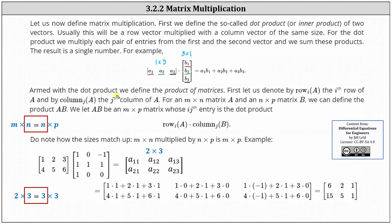Now that we've defined the dot product or inner product, we can define the product of matrices. Let us denote the i-th row of matrix a as row sub i of a, and the j-th column of a as column sub j of a. For an m by n matrix a and an n by p matrix b, we can define the product of a times b. The number of columns in the first matrix must equal the number of rows in the second matrix. In this case, we're multiplying an m by n matrix by an n by p matrix. The multiplication is defined because we have n equals n, and the outer dimensions give us the dimensions of the product, which is an m by p matrix. So we let a times b be an m by p matrix whose i-j-th entry is the dot product of row i from matrix a and column j from matrix b.